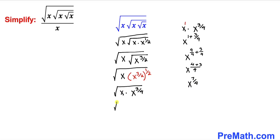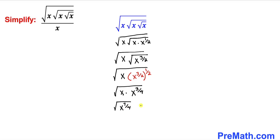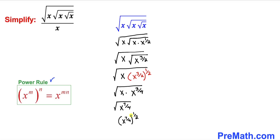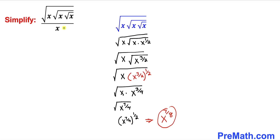We are now left with the square root of x to the power 7 over 4. This can be written as x to the power 7 over 4, and the square root means we take the power 1 over 2. Applying the power rule — multiplying the two nested exponents — the denominator becomes 4 times 2, which is 8. So the numerator simplifies to x to the power 7 over 8.